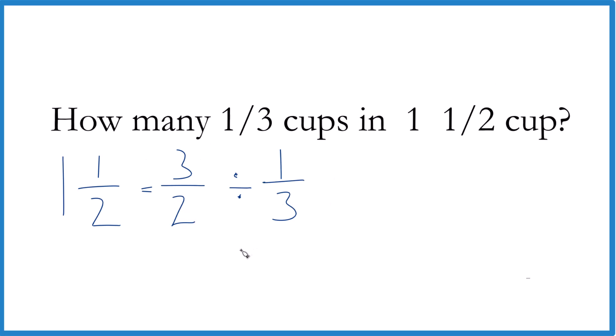Instead of division, we can change this to multiplication. If we change one-third, take the reciprocal of that. Just move the three up here and the one down here. So now we have the reciprocal of one-third, and we can just multiply across.